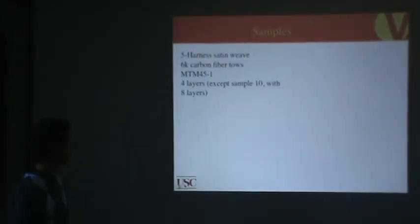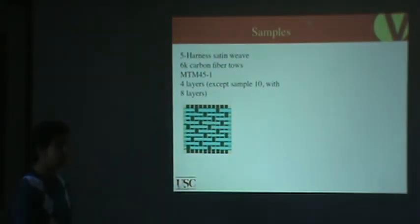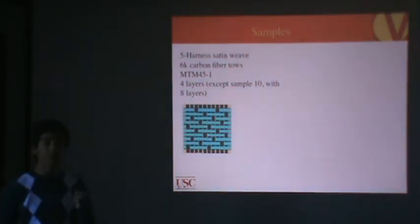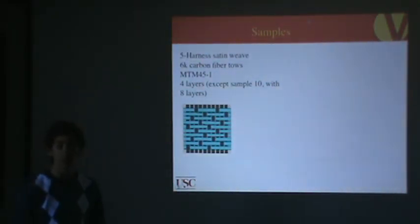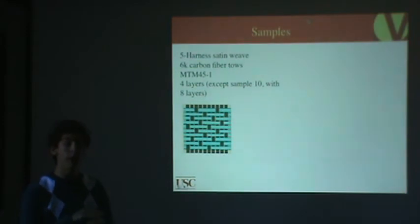In this paper, they used what's called a five-harness satin weave. That's shown here. Essentially, each carbon fiber tow goes over four and under one. You can see that works for both the cross and the longitudinal ones. They used 6K carbon fiber tows, so each tow is made up of 6,000 individual carbon fibers. The resin they used is MTM45-1 from the Advanced Composites Group in Britain. And for these samples, they all had four layers, except for sample number 10, which had eight layers. And they were oriented at zero degrees and 90 degrees.